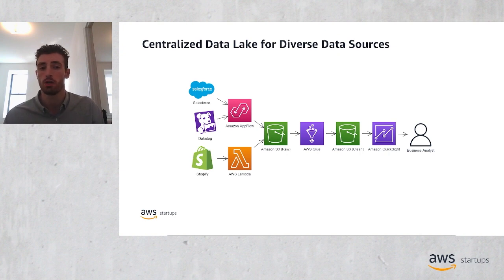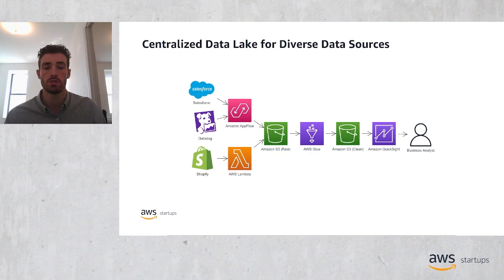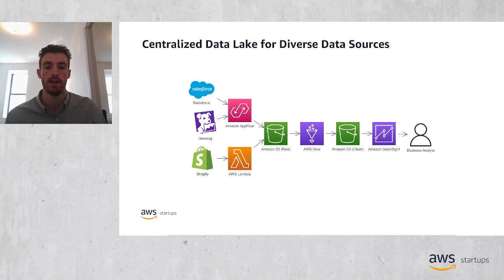Startups can also begin to pool disparate third-party data sources with services like Amazon AppFlow. AppFlow is a fully managed integration service that enables you to securely exchange data between software as a service applications. Customers can import data from third parties like Datadog, Facebook and Google Ads, Google Analytics, Salesforce, Slack, Snowflake, Zendesk, and more. Creating data flows takes minutes and doesn't require any code. AWS Lambda, our serverless compute service, can be used to process other data such as that from Shopify. Lambda also works with Amazon EventBridge SaaS partner integrations, enabling your event bus to trigger rules that evaluate all events and invoke a Lambda function as a target for matched events. Once your data is centralized in your data lake and processed, business analysts can leverage our BI tool QuickSight to visualize that now combined data.